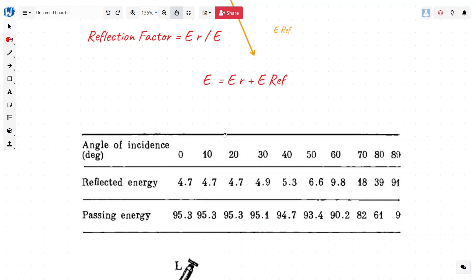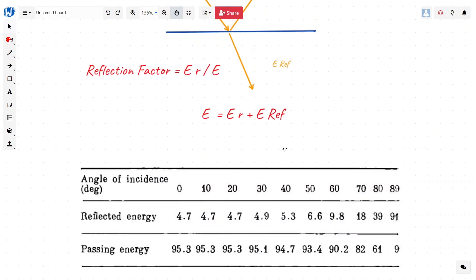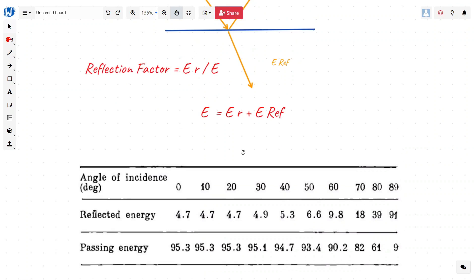It says that as the angle of incidence is increasing, the total reflected energy increases while passing energy or refracted energy decreases. This is just to keep in mind how the reflection works from the point of view of energy propagation.